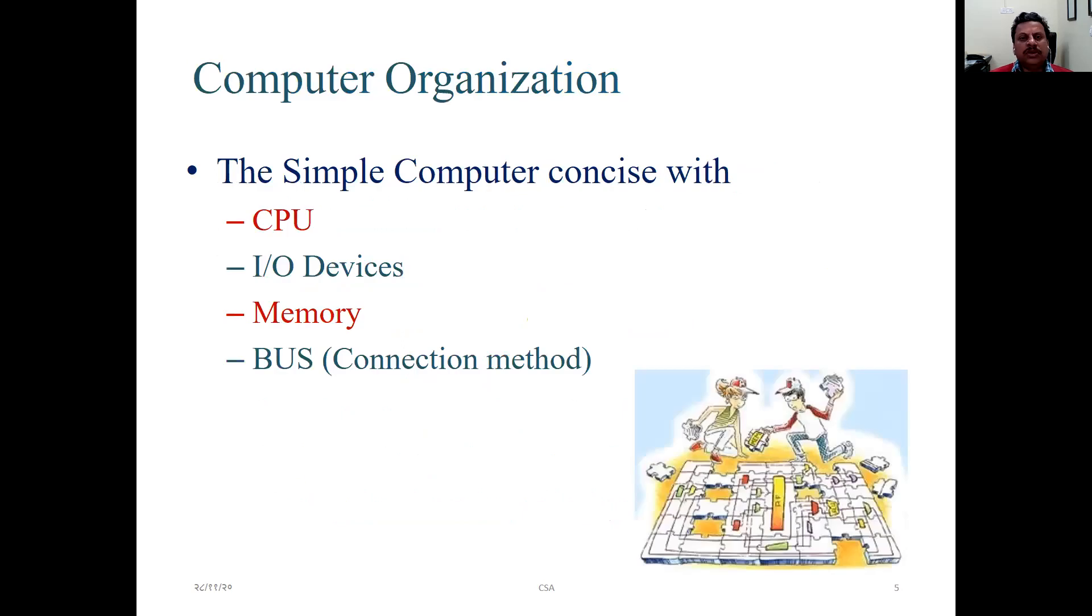So what basically is Computer Organization? Basically computer consists of, that means every computer has CPU, input-output devices, memory, bus connections, and methods. You can see from the clipart already pasted in this particular slide.